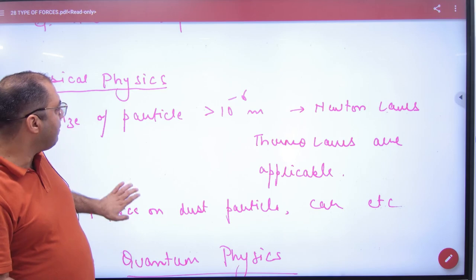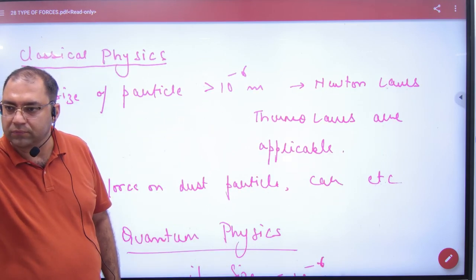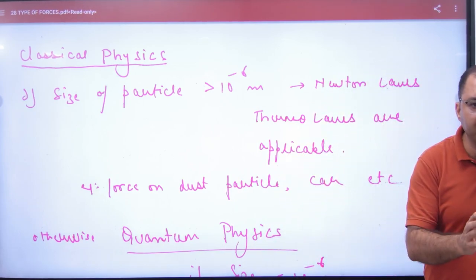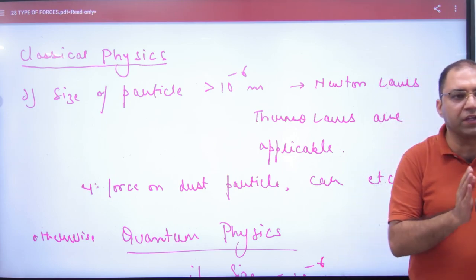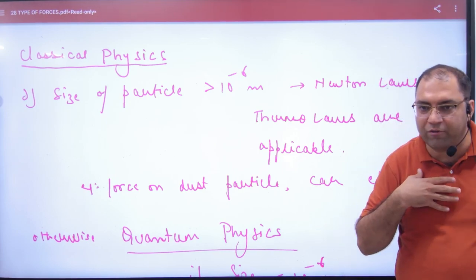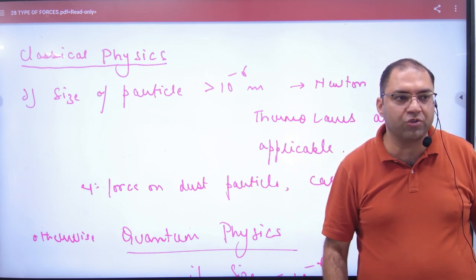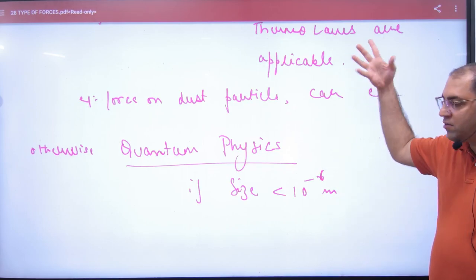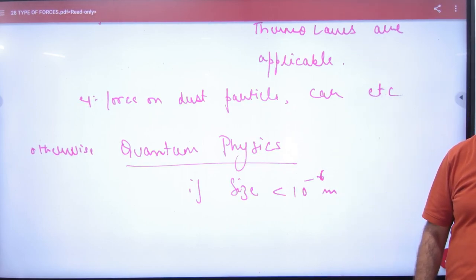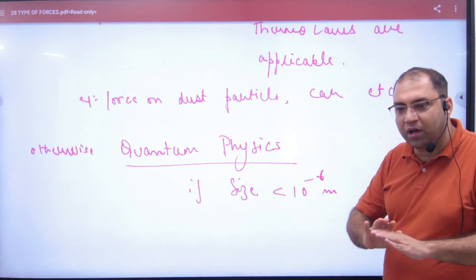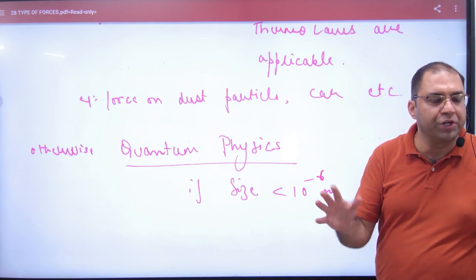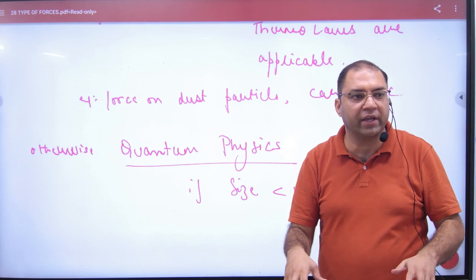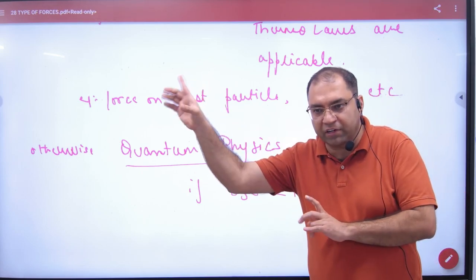In English movies you hear: 'I am working on quantum physics.' Physics is divided into two types: classical physics and quantum physics. If your particle's size is greater than 10⁻⁶ meters — like a car, truck, or yourself — normal Newton's laws and thermodynamic laws work. This is called classical physics, which is what we are studying now. For particles inside the nucleus with very small size, these laws are not applicable — nuclear physics and quantum physics apply there, with different laws and concepts.